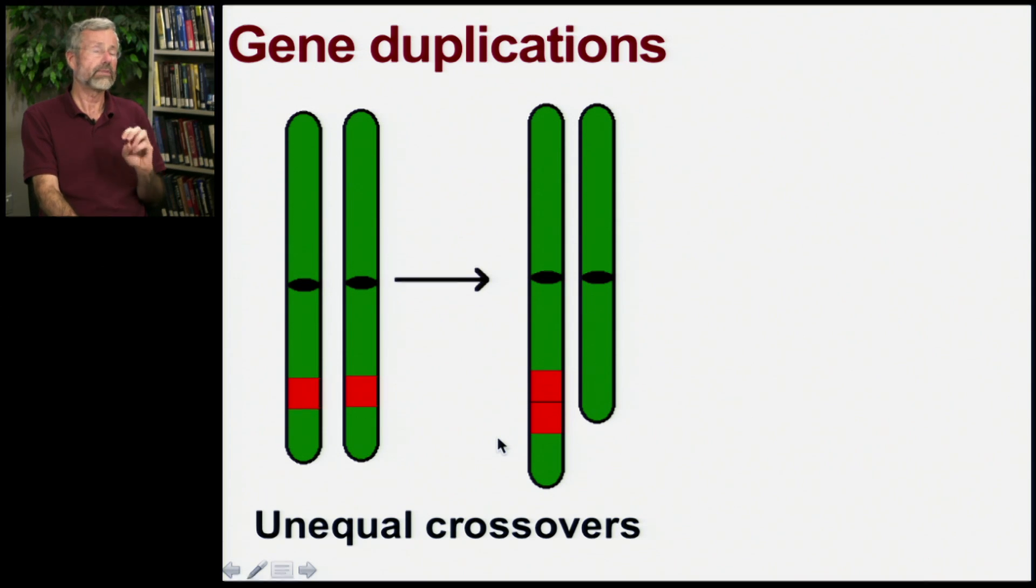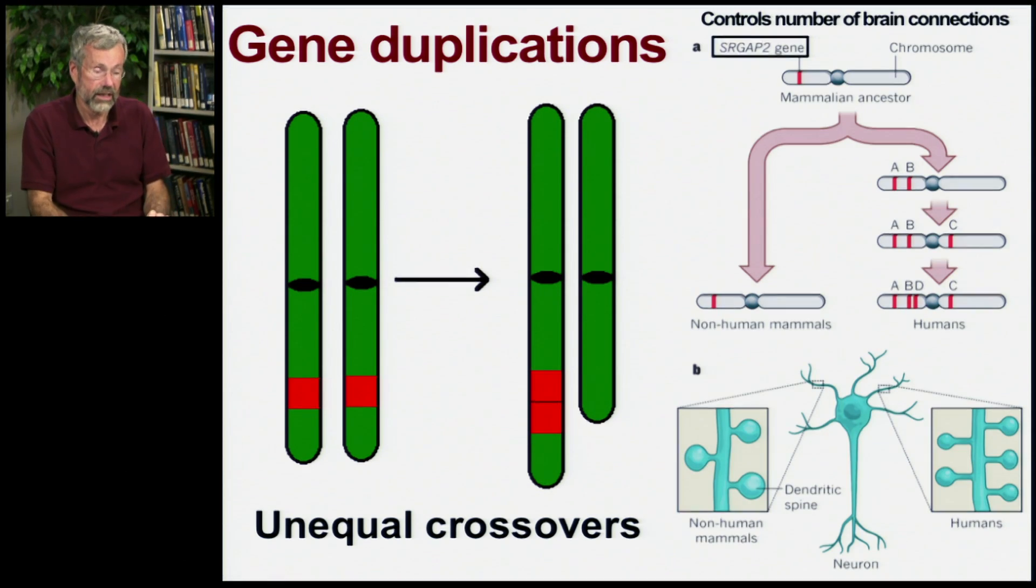And unequal crossovers turn out to be actually quite important in evolution because you're bringing in a whole bunch more gene product by doubling certain loci.